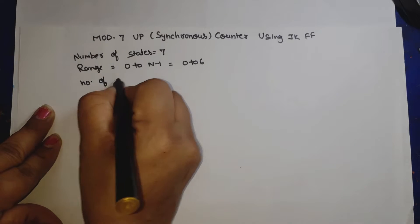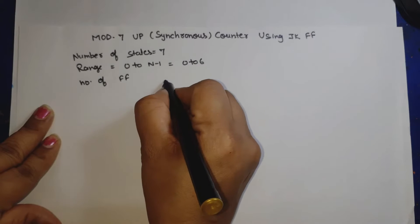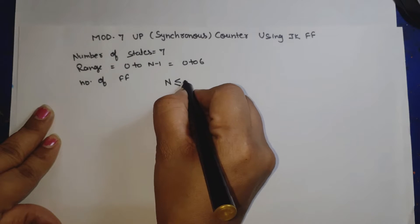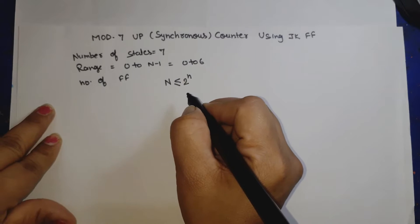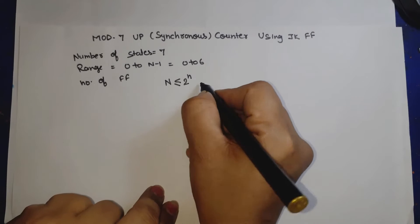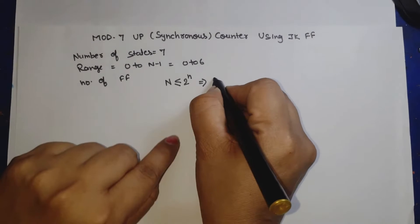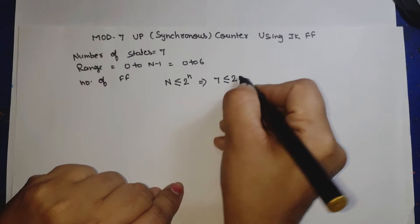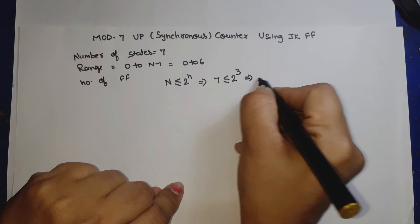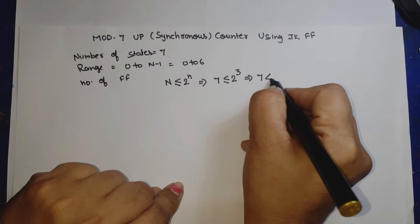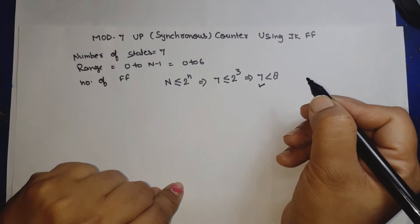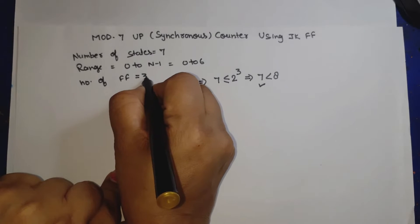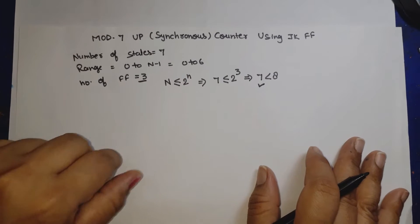For finding the number of flip-flops, we need the condition: N should be less than or equal to 2 raised to power n, where small n is the number of flip-flops. Here N is 7, and 7 is less than or equal to 2 raised to power 3, since 7 is less than 8. So the condition is satisfied — 3 flip-flops are required.